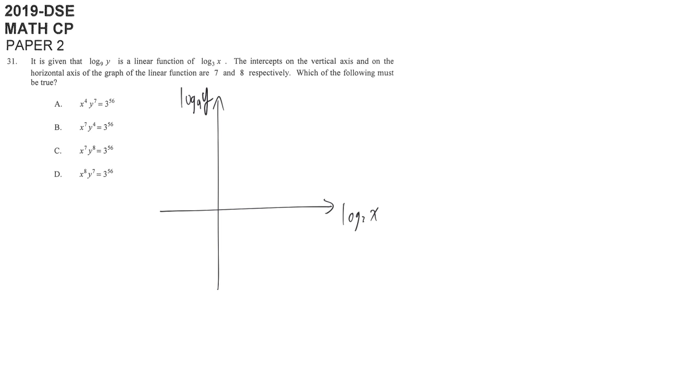But at this moment they give more information about this straight line. They say that the intercept on the vertical axis, they don't use y because now we are not talking about y here, and the horizontal axis are 7 and 8. So the intercept on the vertical axis is positive 7, and the intercept on the horizontal axis, now we're talking about log 3x axis, is 8. So if we connect this line it should be like this.